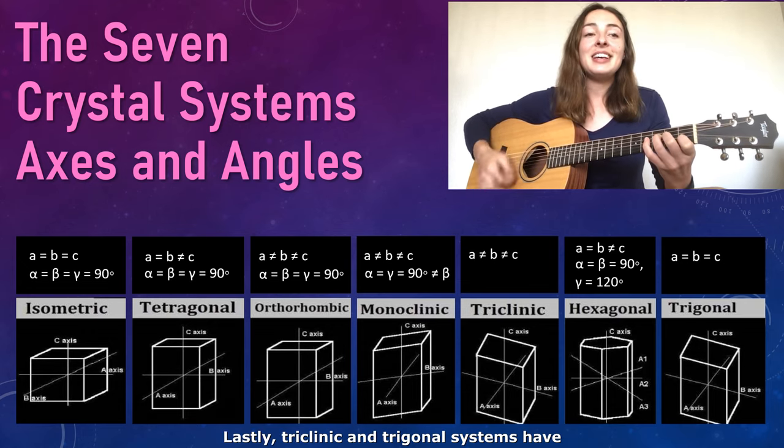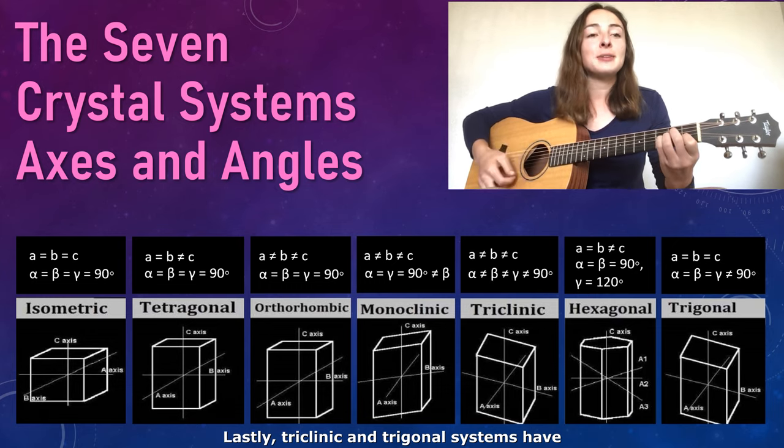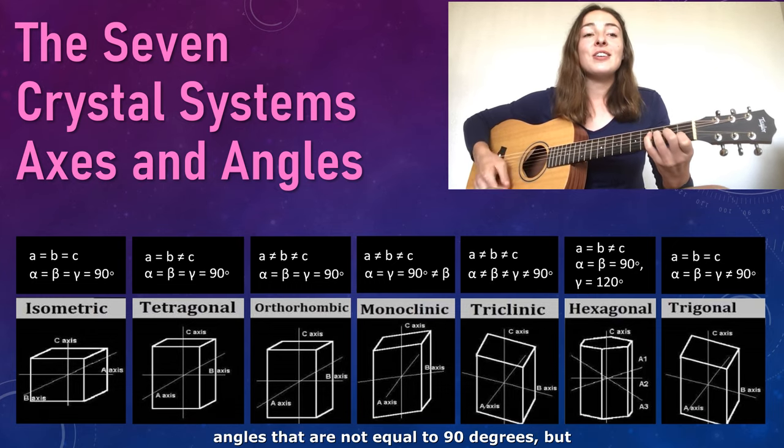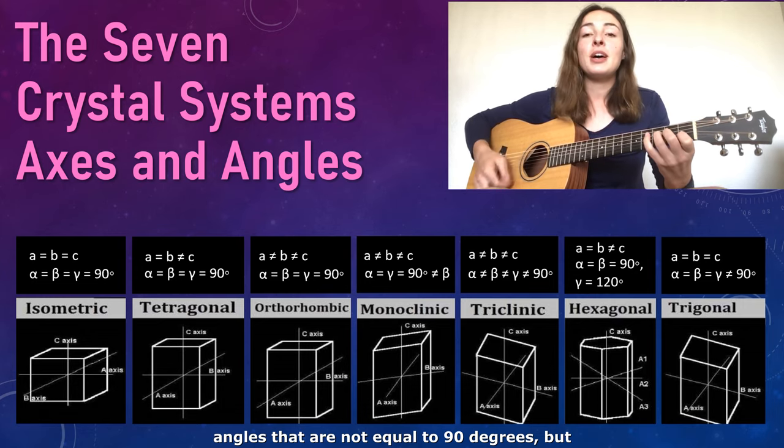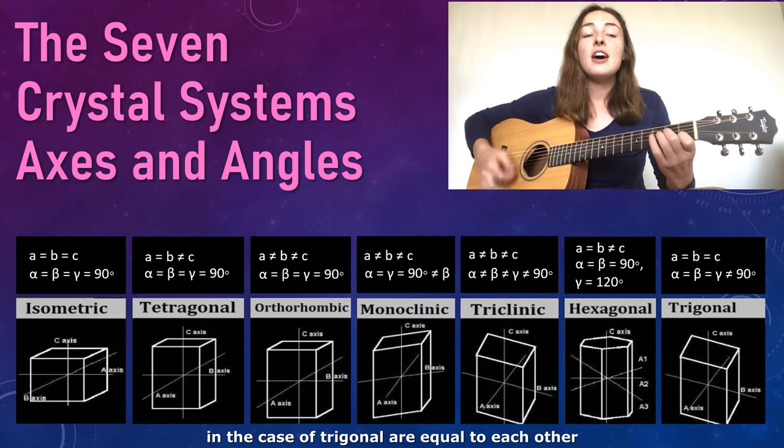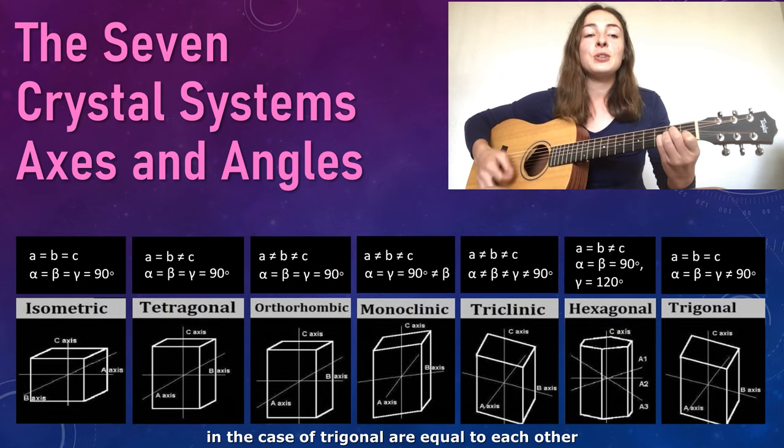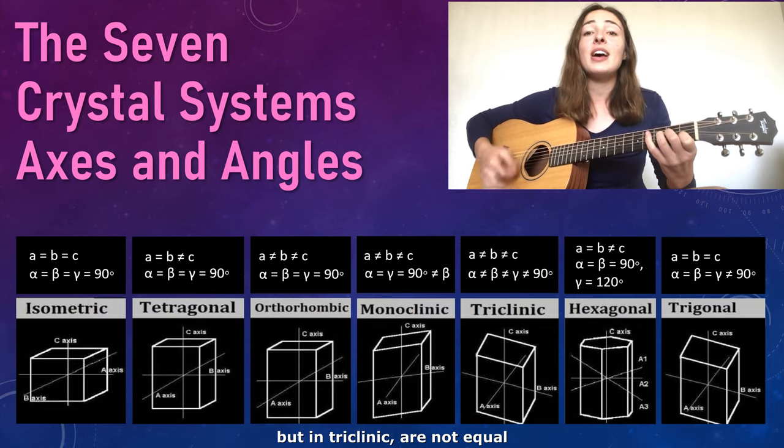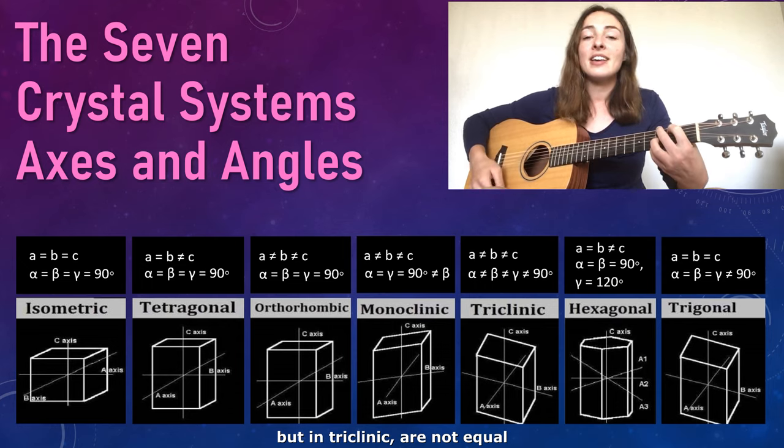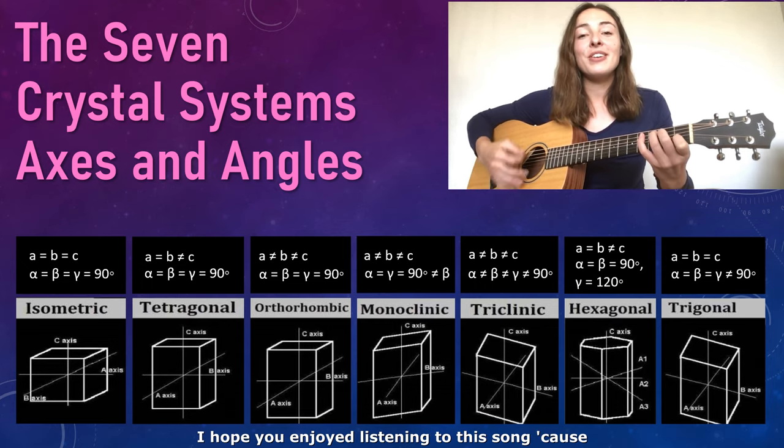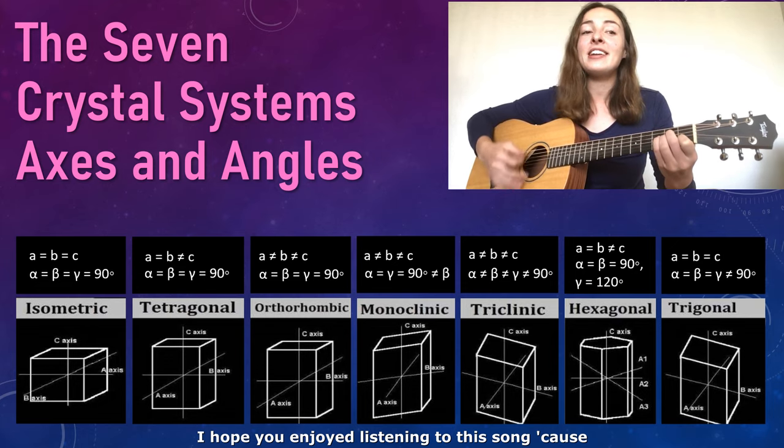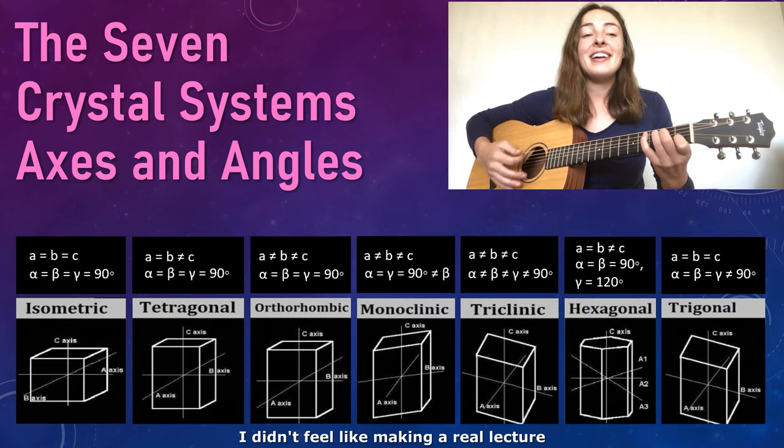Lastly, triclinic and trigonal systems have angles that are not equal to 90 degrees, but in the case of trigonal are equal to each other, but in triclinic are not equal.